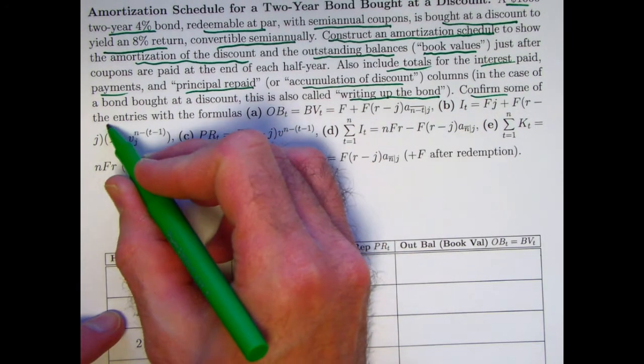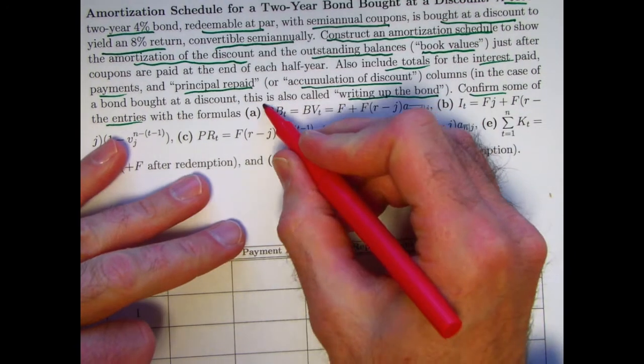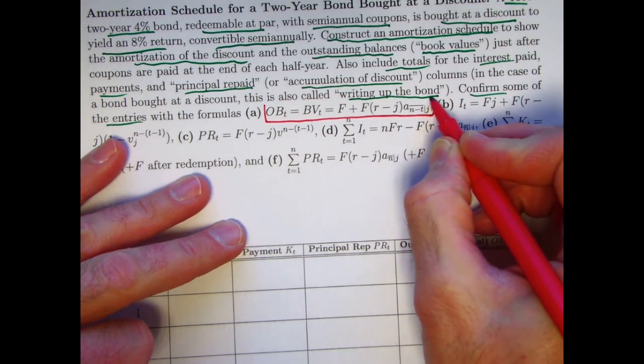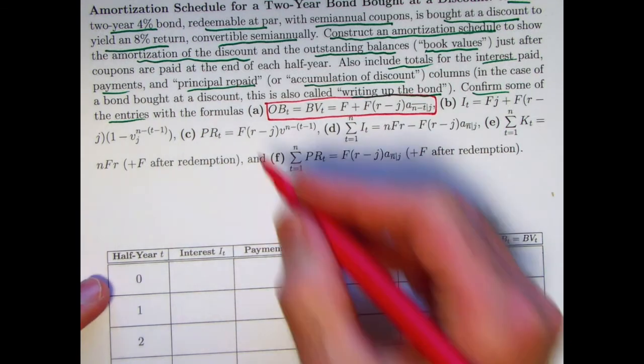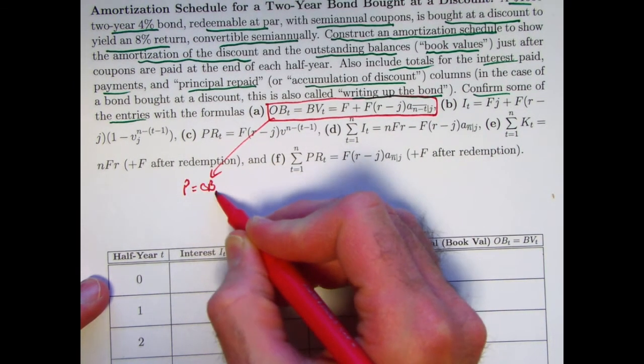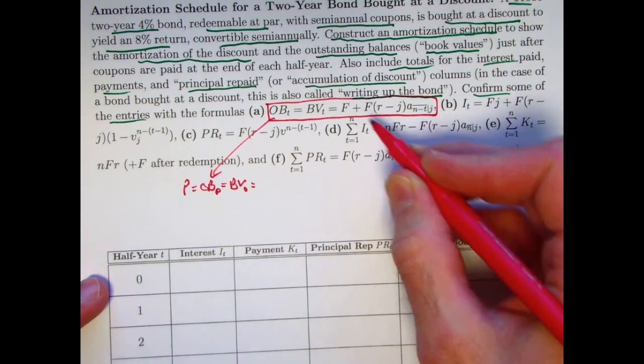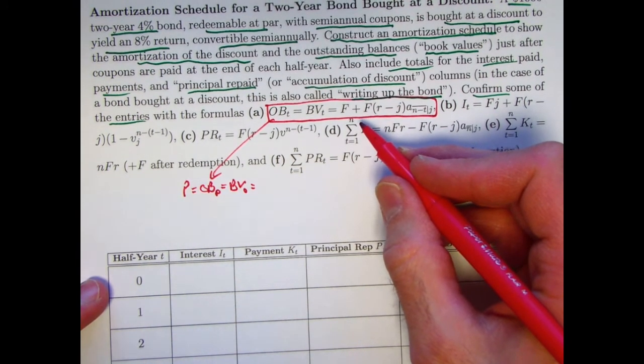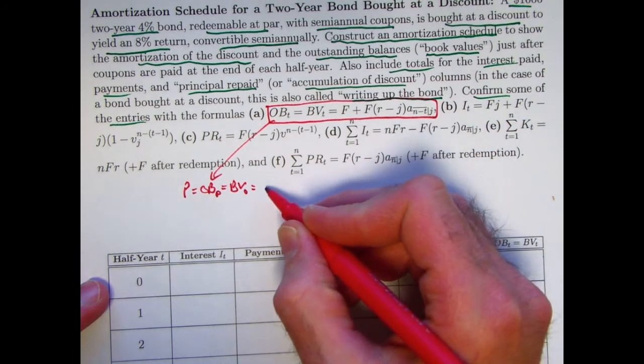We will also confirm some of the entries in the table with these formulas, and right away we'll go ahead and use formula A here, which is our main formula to get the balance at time 0, book value at time 0, which is the same as the price. Price is balance at time 0, or book value at time 0. That's the face value. I'm assuming F is equal to C. It's redeemable at par.